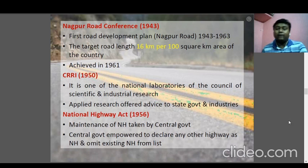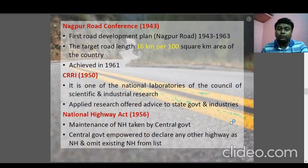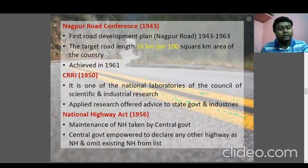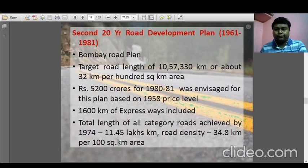The National Highway Act came into picture in 1956. The first Motor Vehicle Act was in 1939, and this was the first National Highway Act. It suggested the maintenance of national highways taken over by the central government, and empowered the central government to declare any other highways as national highways.